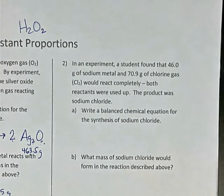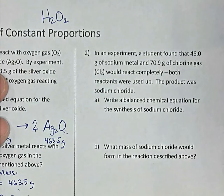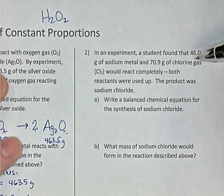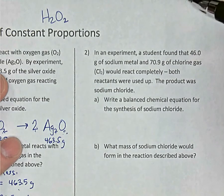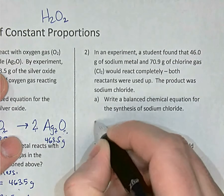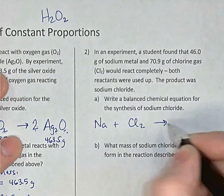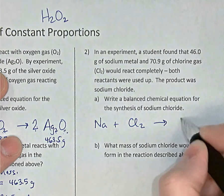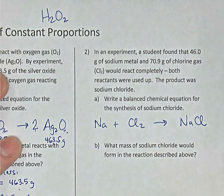Let's do one more question. You have 46 grams of sodium reacting with 70.9 grams of chlorine gas — chlorine is diatomic like oxygen, so it's Cl₂ — and it makes sodium chloride. Write a balanced equation. Sodium (Na) reacts with chlorine (Cl₂) and creates sodium chloride, NaCl, which we saw earlier on our solubility charts.